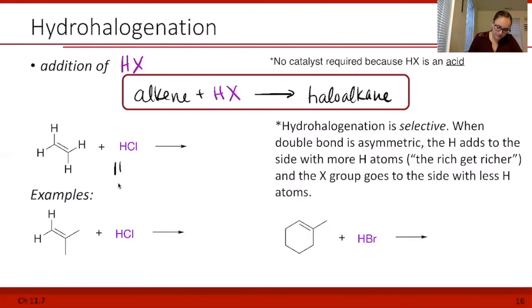We're adding one part of our reagent to one side of the alkene and the other part to the other. This time, hydrogen adds to one side, halogen adds to the other. We have a hydrogen adds to one side of the alkene and our halogen adds to the other. Again, hydrohalogenation is also selective, just like hydration. In the same way, the hydrogen goes to the side with more hydrogens, the halogen goes to the side with less hydrogens.